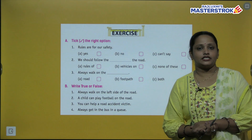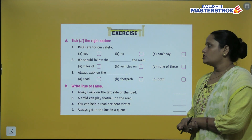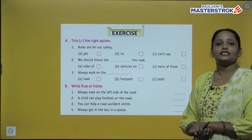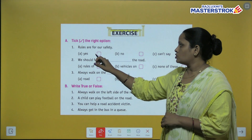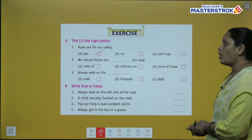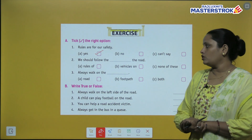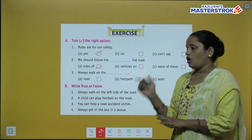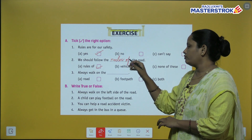Now let's move to the book exercise. The first exercise is: take the correct option. First question — 'Rules are for our safety.' The answer is yes, rules are made for our safety. Next: 'We should follow the dash on the road.' The answer is rules of the road, so we write rules of the road.